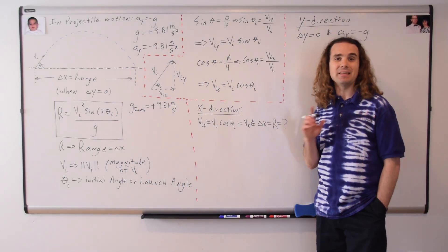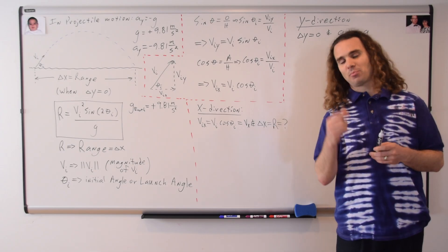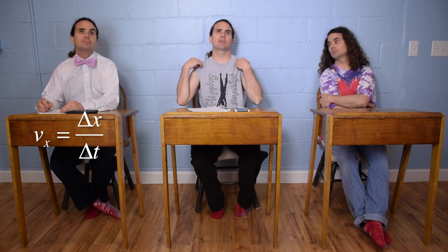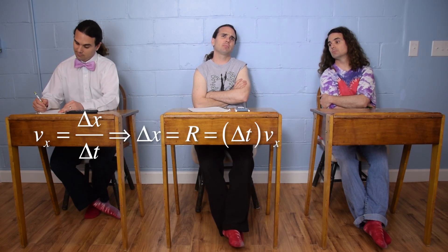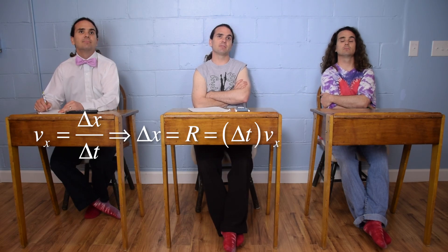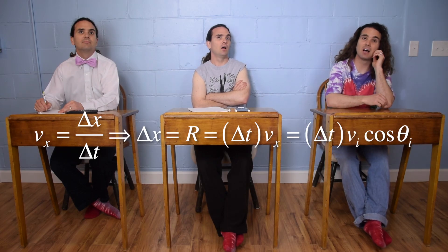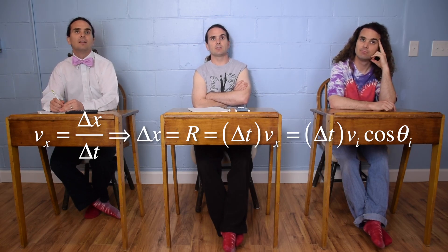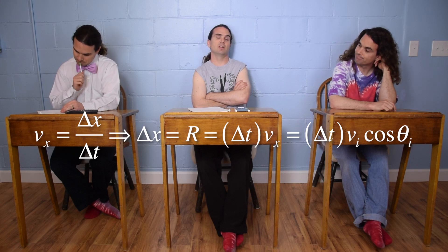Bobby, please start solving the problem in the x direction. The problem is: derive the range equation. So we should solve for the displacement in the x direction, or the range. We know the velocity in the x direction equals the displacement in the x direction divided by the change in time. Multiply both sides by the change in time to get the x displacement, or the range, equals the change in time times the velocity in the x direction. And we have an equation for the velocity in the x direction — it equals the initial velocity times the cosine of the launch angle. So the range equals the change in time times velocity initial times the cosine of the initial angle.